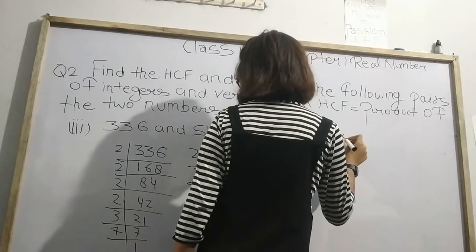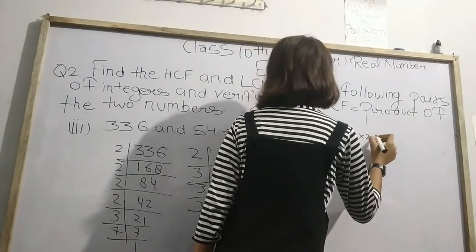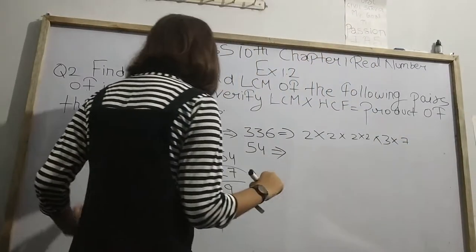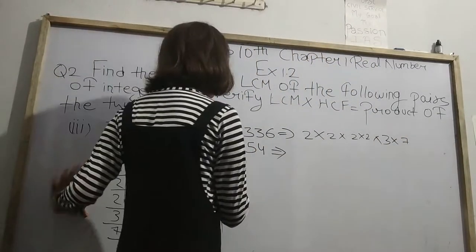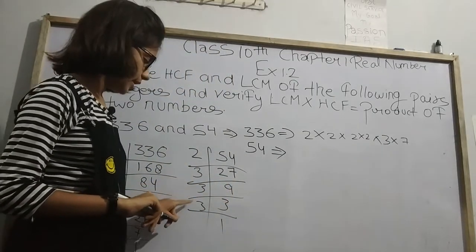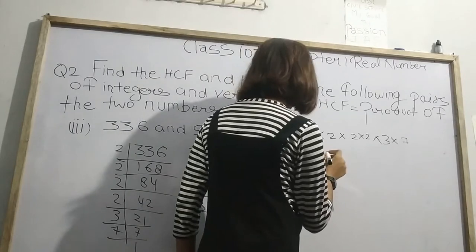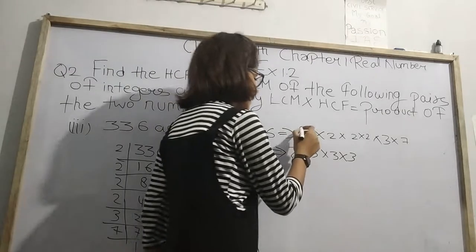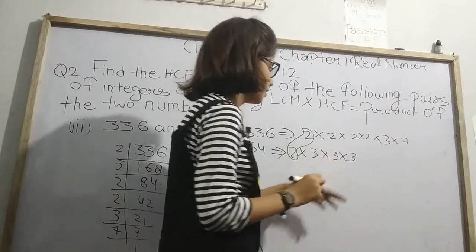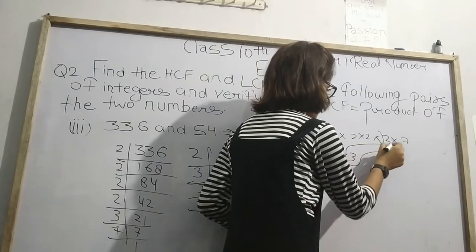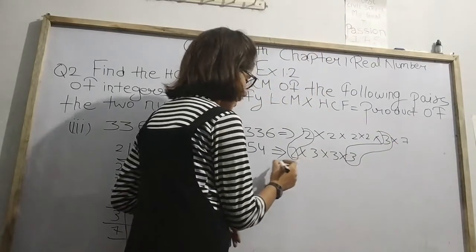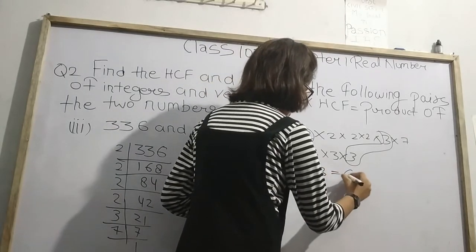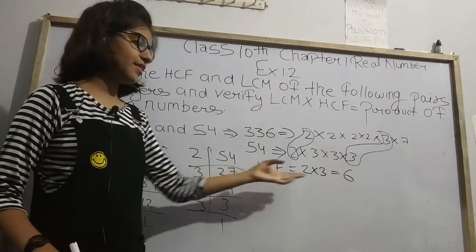Now let's write the prime factors. 336 = 2 × 2 × 2 × 2 × 3 × 7. And 54 = 2 × 3 × 3 × 3. Now let's check the common factors: that is 2 and 3. So HCF = 2 × 3 = 6. We have found our HCF, which is 6.